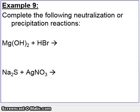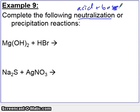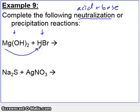Let's go ahead and try some examples. We're asked to complete the following neutralization or precipitation reactions, and we need to find out which is which. To find the neutralization one, look for an acid and a base, because neutralization involves an acid and a base. The first one has your acid here and your base here — so the first one is a neutralization reaction. In both of these, we have double replacement, so the metal will replace a similar element, and hydrogen replaces the metal.